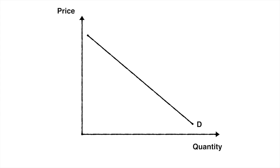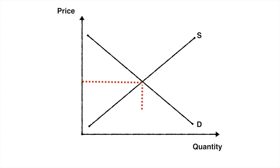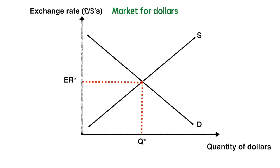Let's start with our supply and demand diagram from Unit 2, but we'll make some slight adjustments for foreign exchange, considering the market for US dollars being purchased by people or institutions from the UK. From Unit 2 we can recall that market forces determine an equilibrium price and equilibrium quantity for a good. We'll see how this applies to the market for dollars. We change the y-axis label from price to exchange rate because the exchange rate represents the price of dollars in pounds.